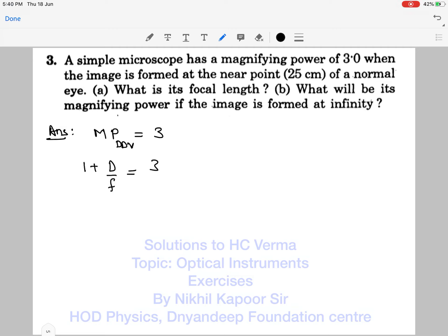When the image forms at D, it is given by 1 + D/f = 3, so D/f = 2. Therefore, focal length f = D/2 = 25/2, which comes out to be 12.5 centimeters.